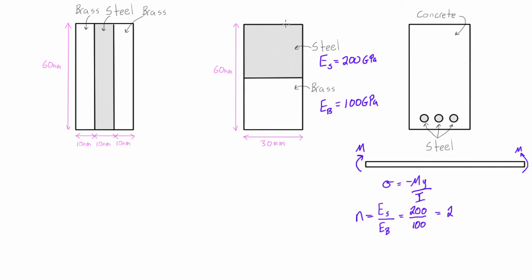If we had written it like n is equal to Eb over Es, then we're going to get 100 over 200 and we're going to get n equals 0.5. And so then we'd actually be multiplying the brass area by 0.5 or reducing it, or in this case multiplying the brass. Then we'd be solving as if the modulus of elasticity of the whole thing was equal to 200 gigapascals, whereas in this case we're solving as if we've converted everything to brass, so the modulus of elasticity is 100 gigapascals.